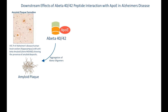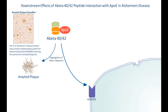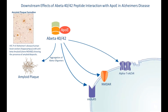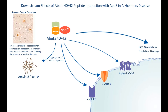Downstream, A beta 40-42 with APOE also interacts with MGLUR5, NMDAR, and alpha 7 nAChR, as well as leads to reactive oxygen species and oxidative damage.